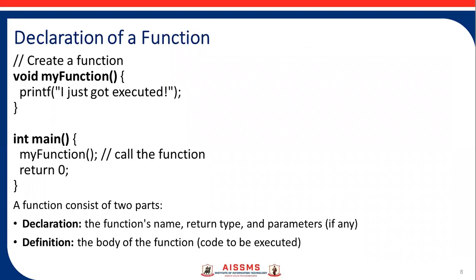Next are the declarations of a function. First, we create a user-defined function: void myFunction(). Inside that function, we print the statement 'I just got executed.' The main function is important because without the main function, we cannot execute the program. In the main function, we call the user-defined function myFunction(). Then at the end, we return zero because the main function's return type is integer. A function consists of two parts: the declaration part — which specifies the function's name, return type, and parameters — and the definition part, which contains the body or code to be executed.